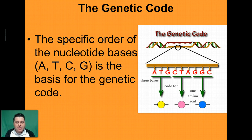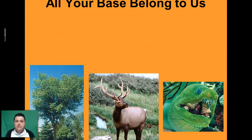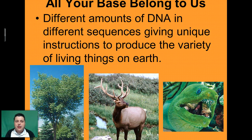When we look at our DNA, the code itself is going to be the specific order of those nucleotide bases. That order of A's, T's, C's and G's is going to be the basis for the genetic code. What makes that DNA code different is the order of those bases and then how much of that DNA that an organism has.